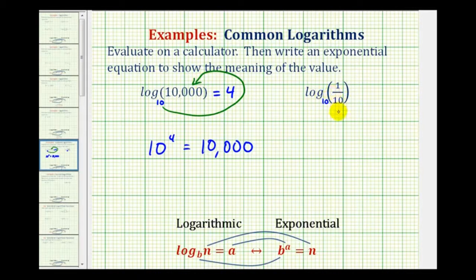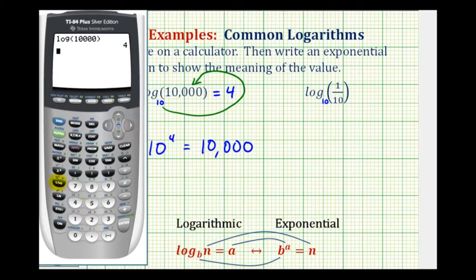Now we have the common log of one tenth. So we'll go back to the calculator, press the log key which is the common log, and then one tenth, so one divided by ten, close parenthesis, press enter. This is equal to negative one.